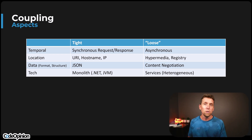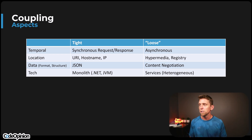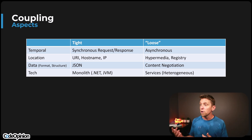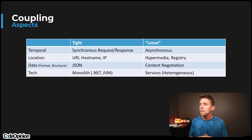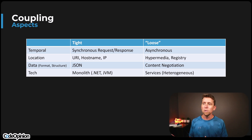If you have a specific format you're using — JSON — that's what people are expecting. A looser form of that, if you're using HTTP and have an API, is doing some type of content negotiation, letting the client dictate what they want. They'll still need to know the structure, but the format they could be dictating. I mentioned tech: if you're in a monolith using .NET, JVM, etc., all that in-process communication means you're coupled to that technology. But if you have different services — internal or external — it doesn't matter what technology is used on one side or the other; you're loosely coupled in that way.